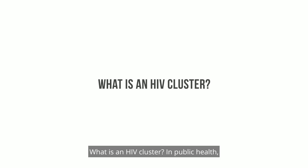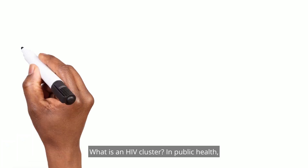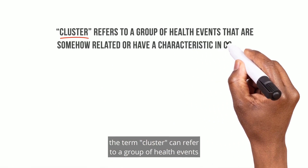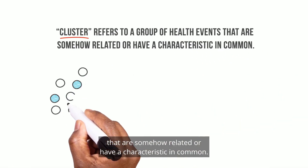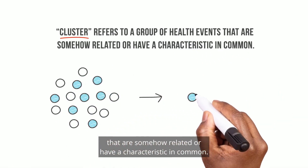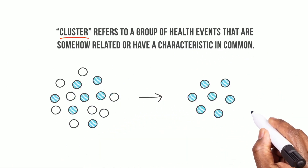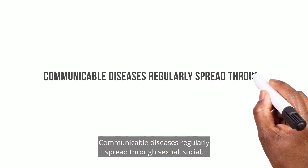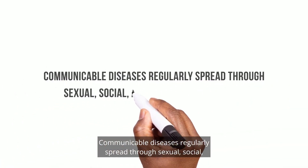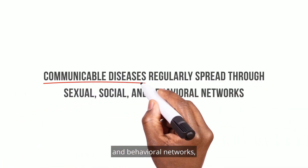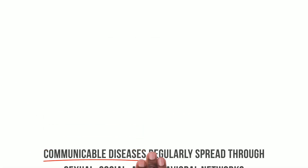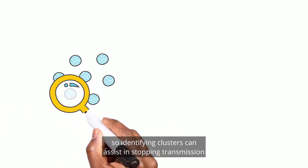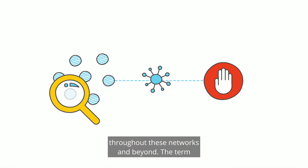What is an HIV cluster? In public health, the term cluster can refer to a group of health events that are somehow related or have a characteristic in common. Communicable diseases regularly spread through sexual, social, and behavioral networks, so identifying clusters can assist in stopping transmission throughout these networks and beyond.